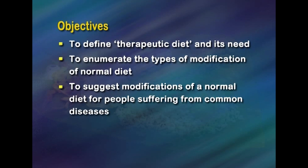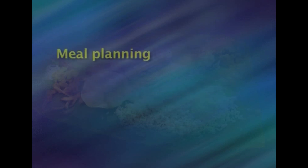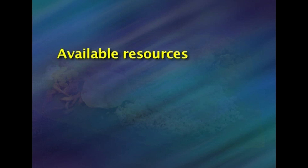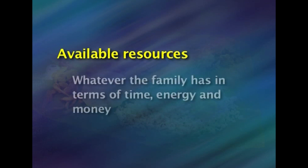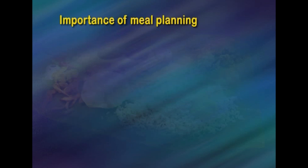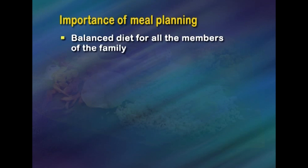Definition: Meal planning is making a plan of meals with adequate nutrition for every member of the family within the available resources. The term 'available resources' means whatever the family has in terms of time, energy, and money.